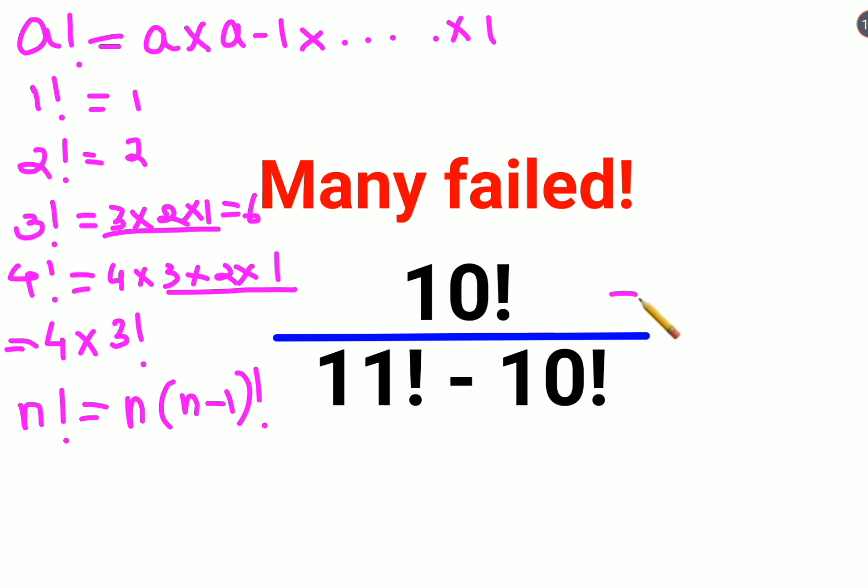So similarly here, 10 factorial I will keep it as it is, but instead of writing 11 factorial I can write it as 11 into 10 factorial minus 10 factorial.